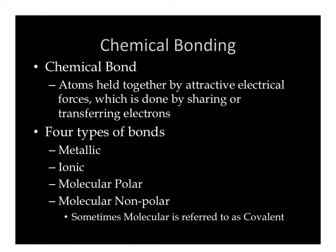We have four main types of bonds: metallic bonds, ionic bonds, molecular polar bonds, and molecular nonpolar bonds. Sometimes you'll see molecular being referred to as covalent — these words are just interchangeable.